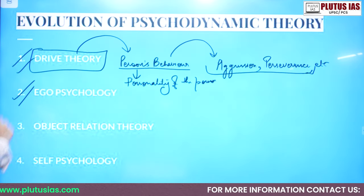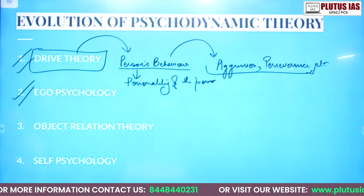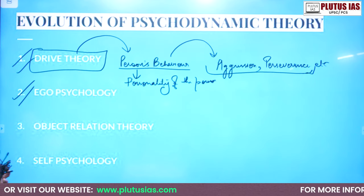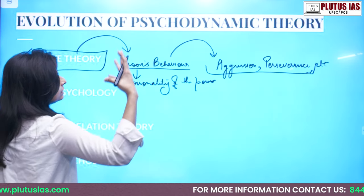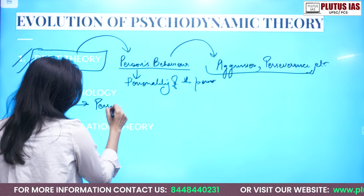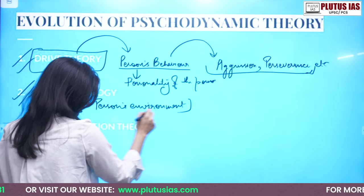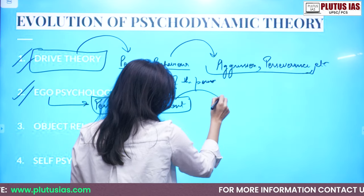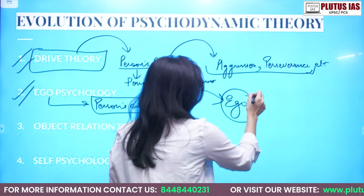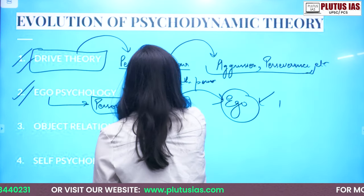The second one is ego psychology. What is ego psychology? Ego psychology talks about the person's environment, or you can say the person's reality, which leads to a person's ego. There is a person's environment in which the person is born and brought up, and this leads to a buildup of the person's ego, which becomes a part of the person's personality.